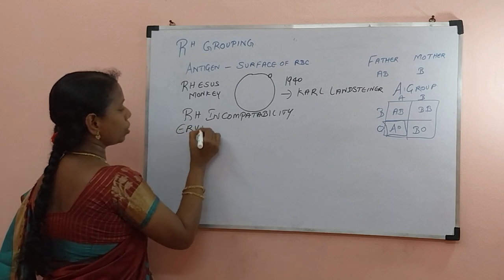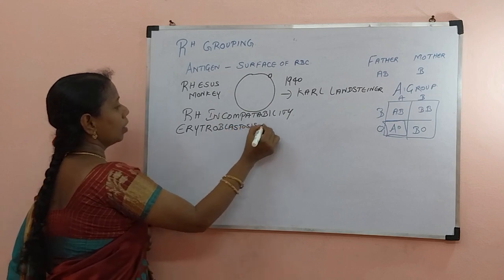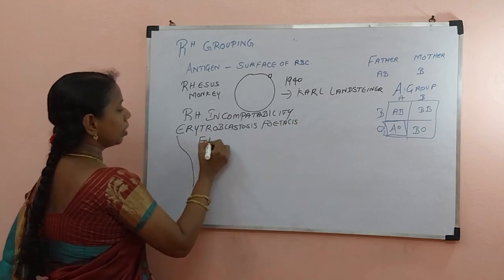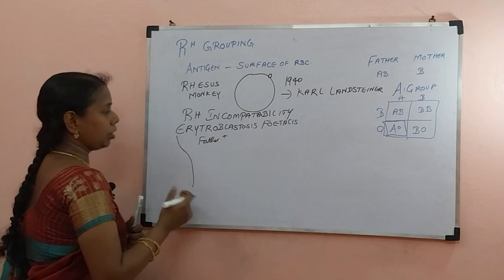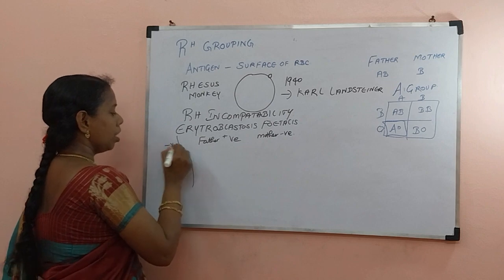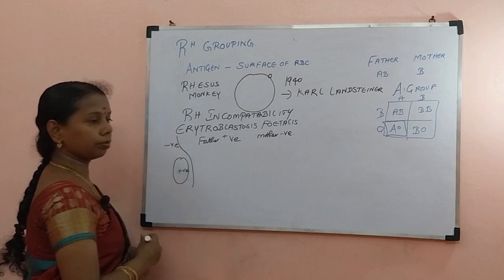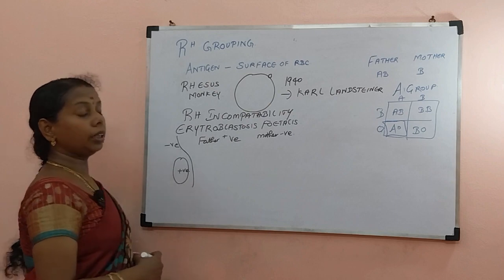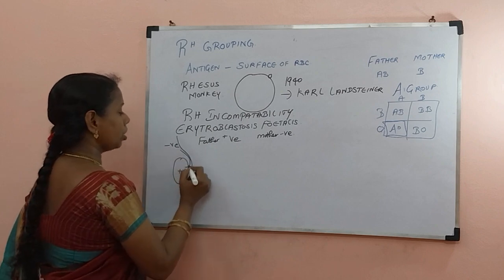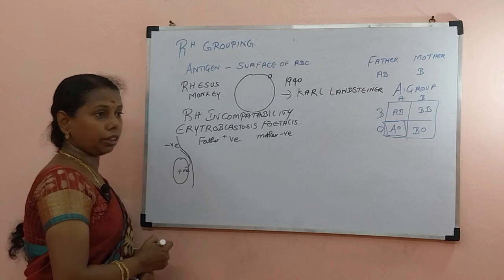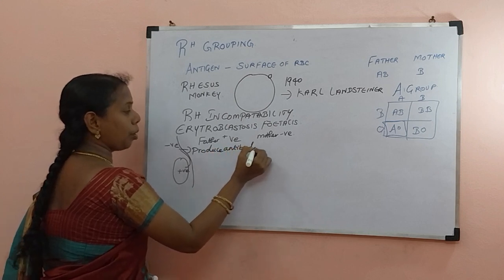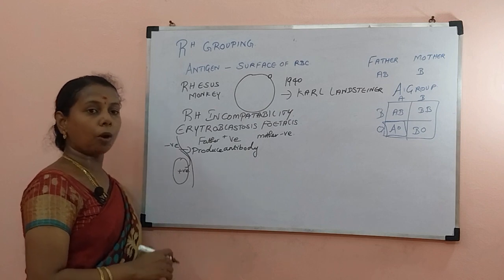One example of RH incompatibility is erythroblastosis fetalis. Here the father has a positive blood group — A positive, B positive, anything positive. The mother is negative. The child formed inside the womb is positive. In the first pregnancy, by the time the child is fully developed, a little amount of blood is transfused to the mother via the placenta. The mother receives the antigen, recognizes it, and produces antibodies. By the time she produces the antibody, the child is delivered — so it is not a big problem for the first child.